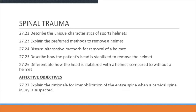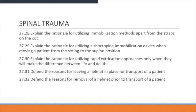The affective objectives include: explain the rationale for immobilizing the entire spine when a cervical injury is suspected, explain the rationale for utilizing immobilization methods apart from the strap on a cot, explain the rationale for utilizing a short spine immobilization device when moving a patient from a sitting to supine position, explain the rationale for utilizing rapid extrication only when it will make the difference between life and death, and defend the reasons for both leaving a helmet in place and removing a helmet during patient transport.